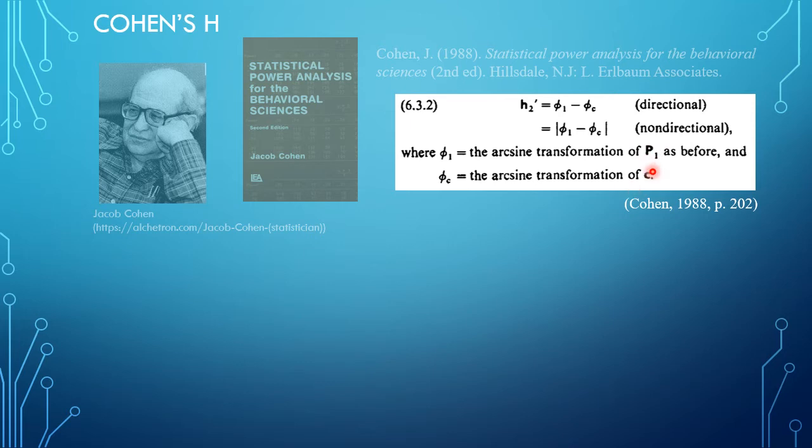That means both of them get arc sine, and then you take the square root out of them, and then you multiply them with 2.